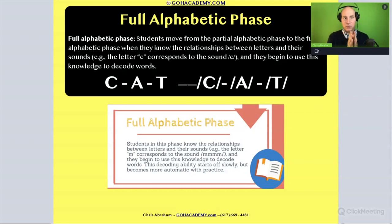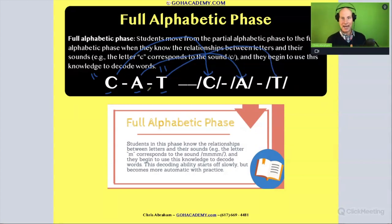You know a child is fully alphabetic when they use the alphabetical principle to decode words. They're able to take a word like 'cat' in a text and go to each one of these letters and match those letters up with a predictable sound, so they're like 'cat, cat.'